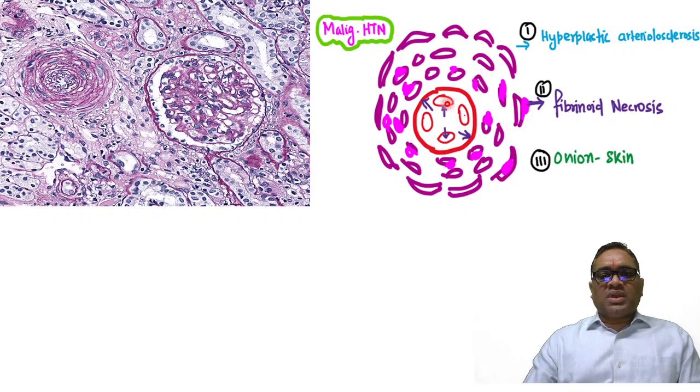Second, fibrinoid necrosis - because of the endothelial damage, fibrin will be deposited. And overall, this appearance will give you a cut section of the onion peel, which is why it is called onion skin appearance.